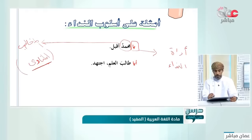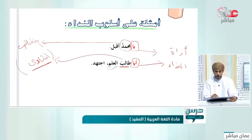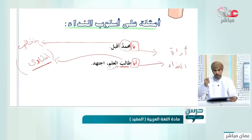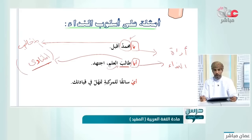مثال: أيا طالب العلم اكتهد. هنا أداة النداء هي 'أيا' والمنادى هو 'طالب'. العلم هنا مضاف إليه لكلمة طالب لتخصيصه وتعريفه. يا طالب العلم لم أطلق عليه اسماً محدداً كما في المثال الأول محمد، وإنما أطلقت عليه صفة من صفاته.